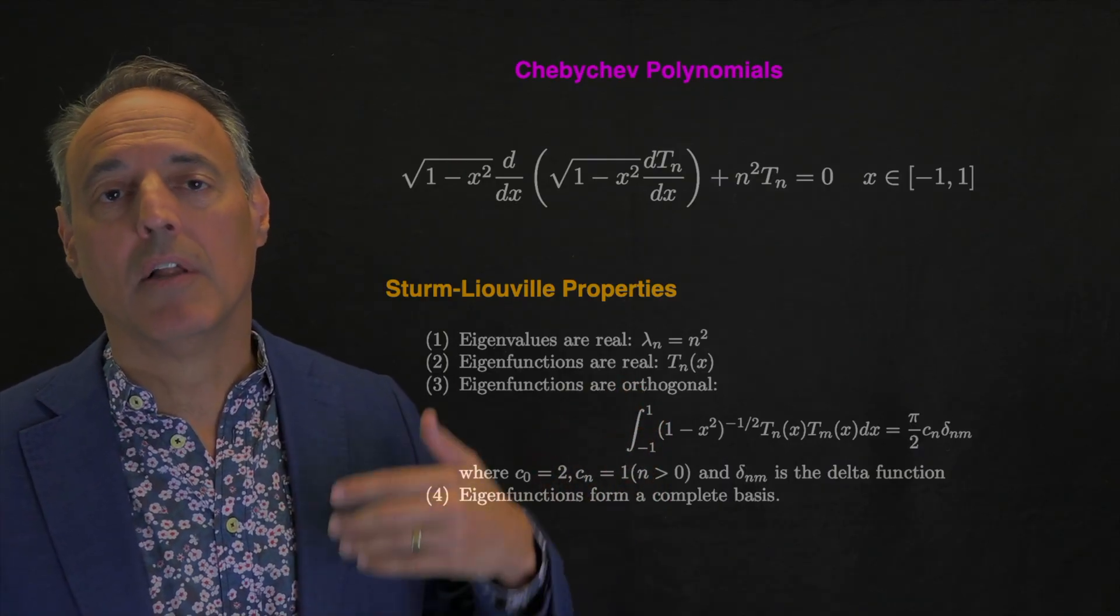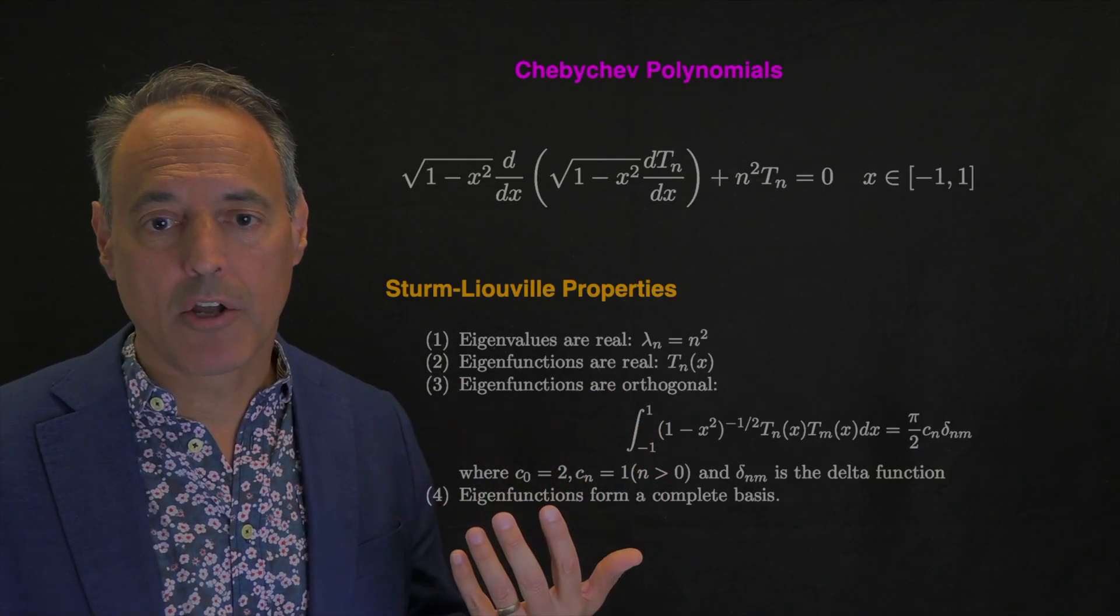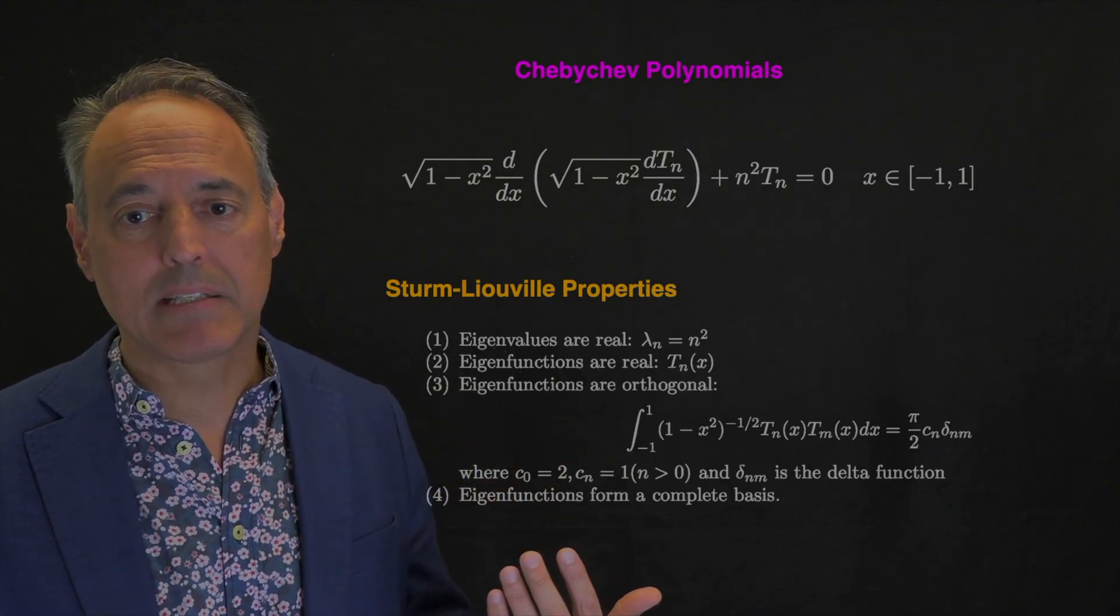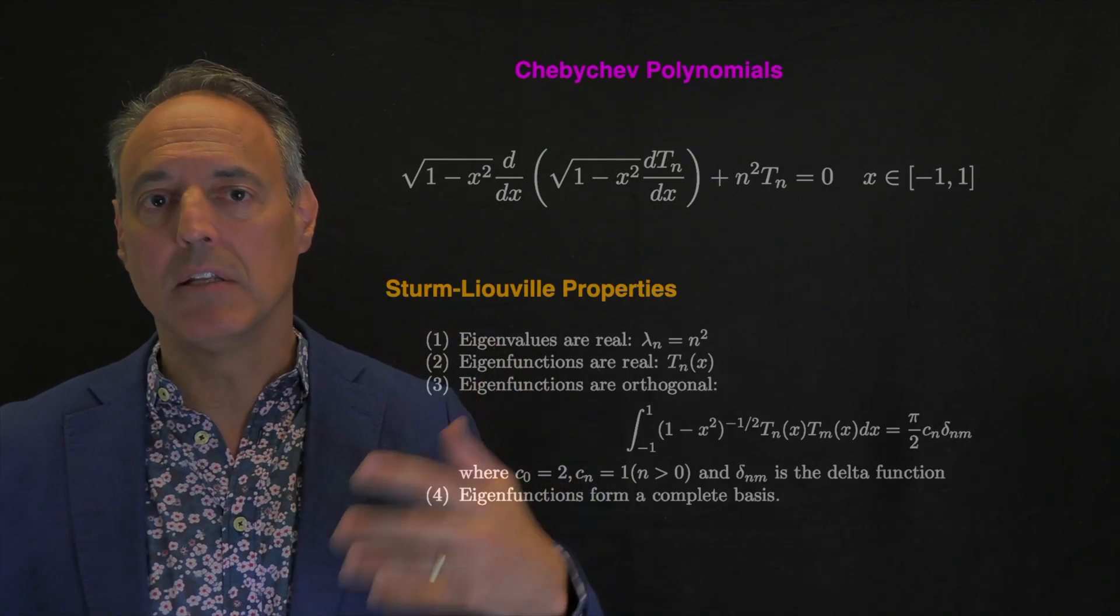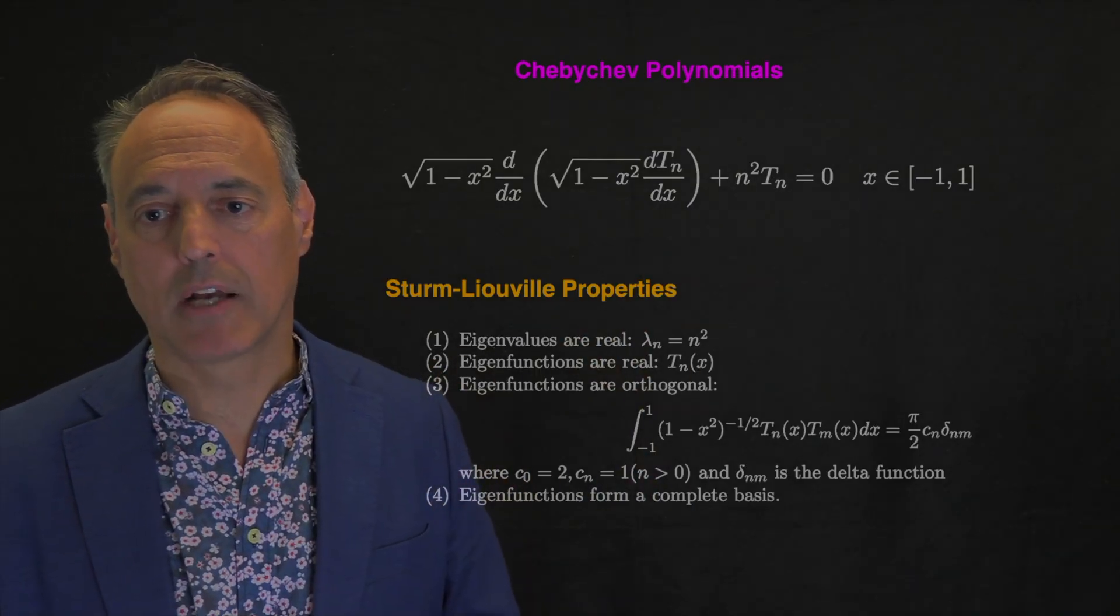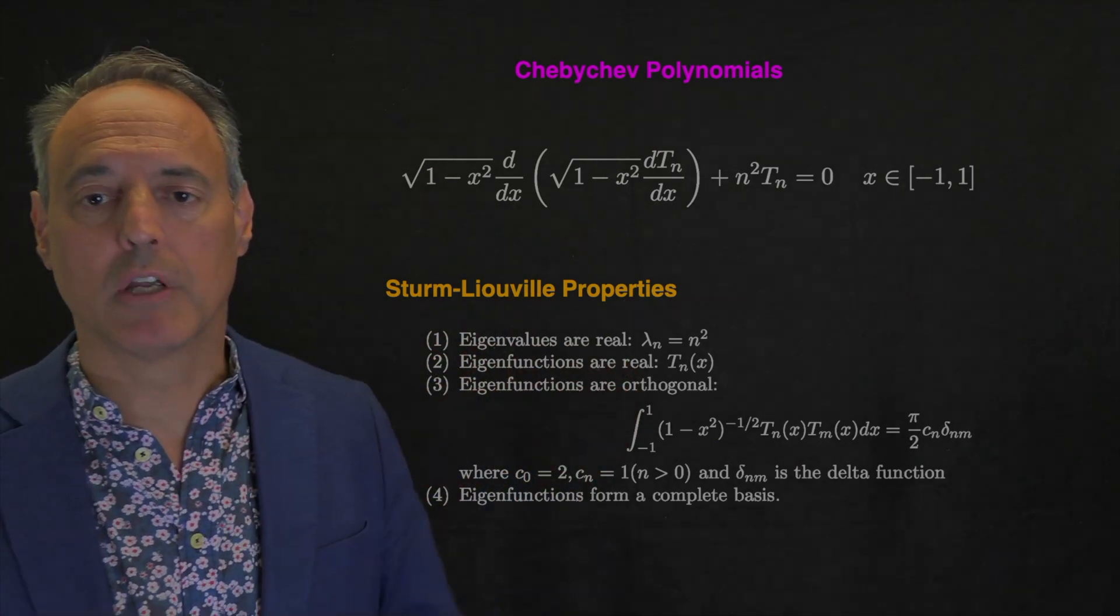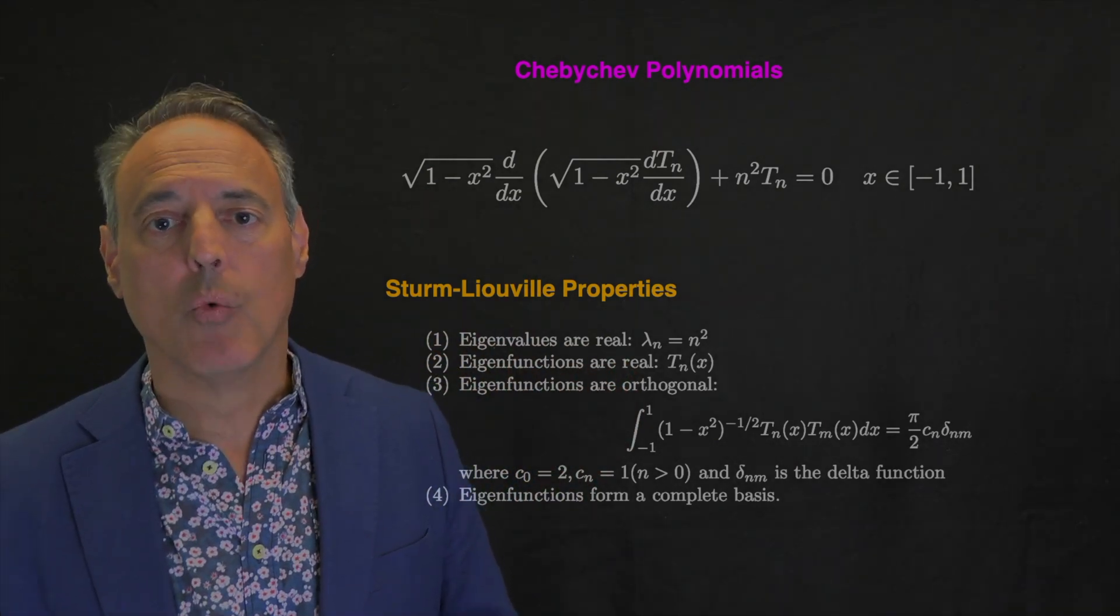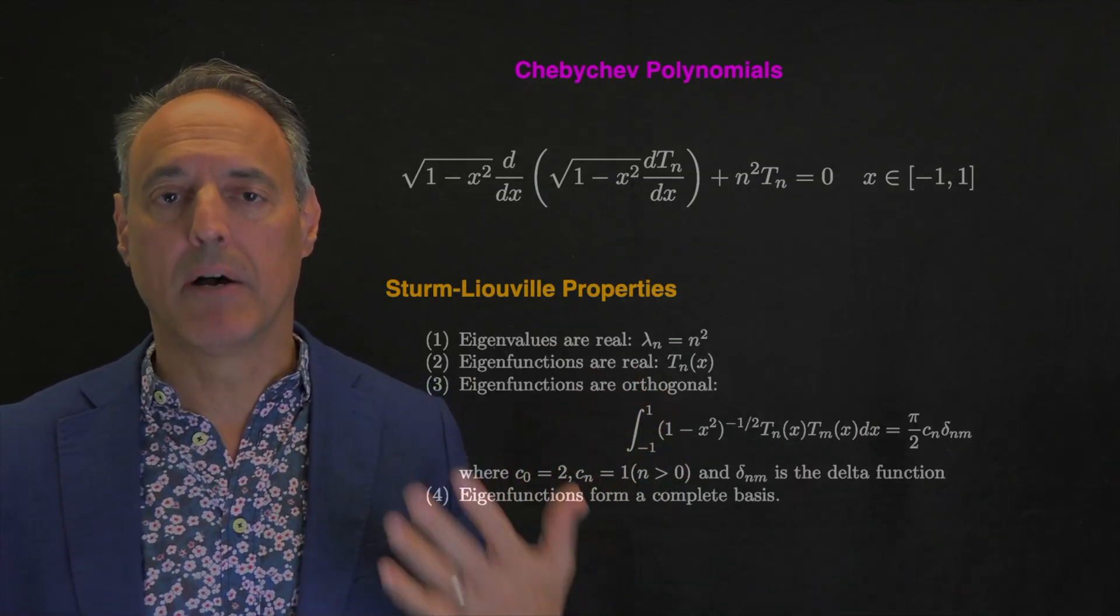Sturm-Liouville problems are self-adjoint or Hermitian, which have advantageous properties. The eigenvalues are real. The eigenfunctions are real and orthogonal. They form a complete basis, meaning you can expand anything. You're guaranteed this expansion will converge to the actual solution.